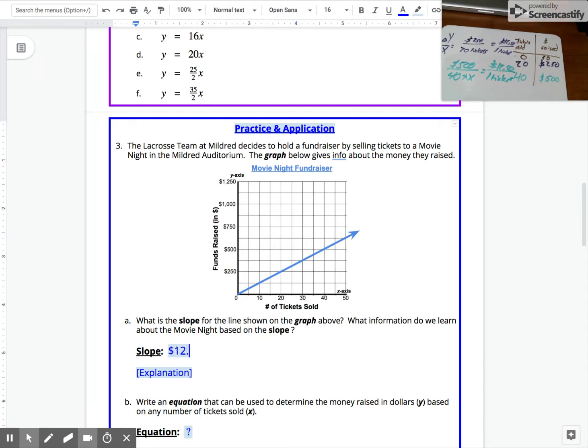So if you were to put your answer using units—twelve dollars and fifty cents for every one ticket—then you actually wouldn't even need an explanation here. You could even just say 'see above' and not bother writing an explanation, because what information do we learn about the movie night? Well, they fundraise twelve dollars and fifty cents for every one ticket.